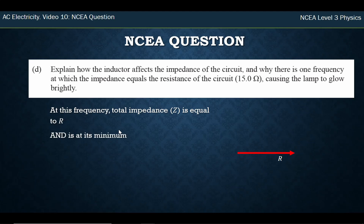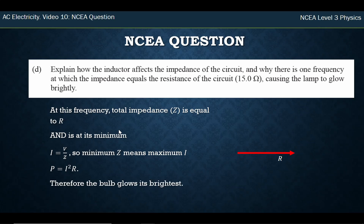This is the minimum value for Z. Because it's the minimum value, we get the maximum current. And using P = I²R once more, the bulb will glow at its brightest. And that was the second excellence question.